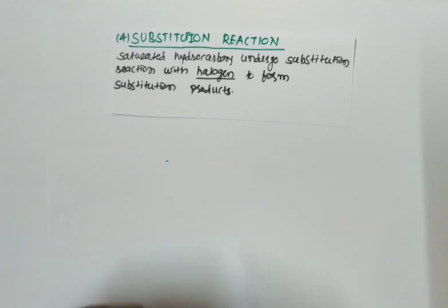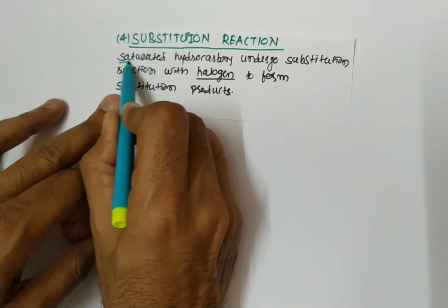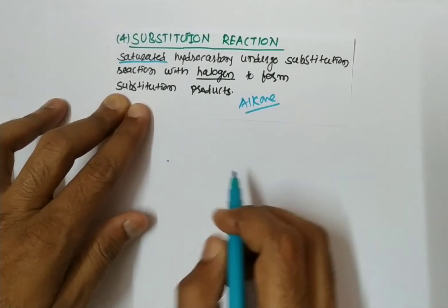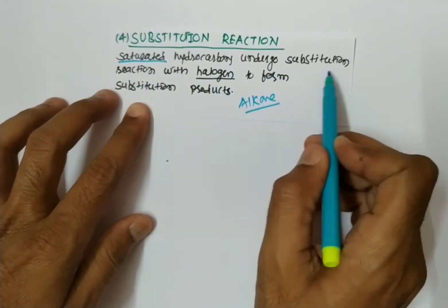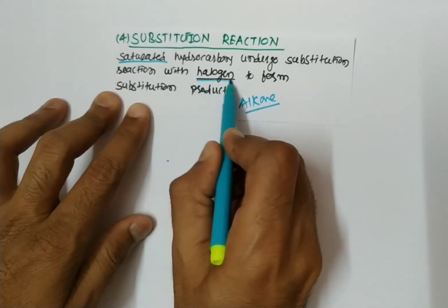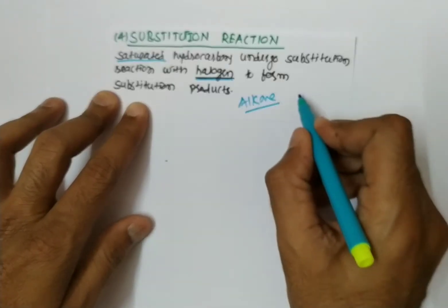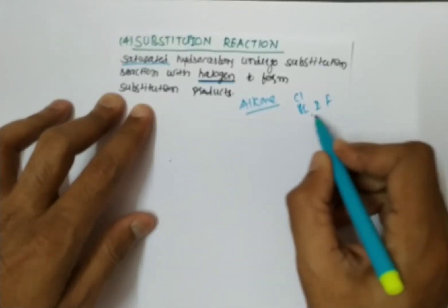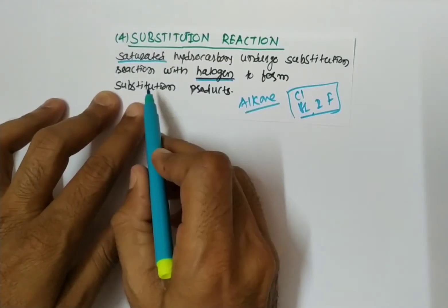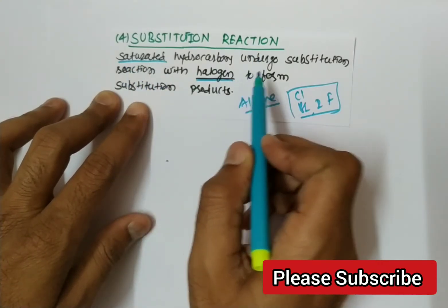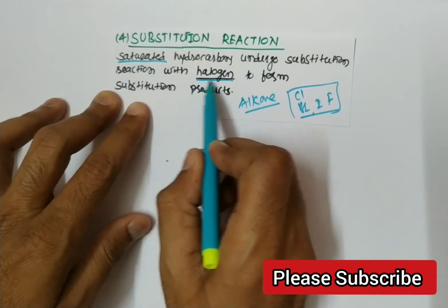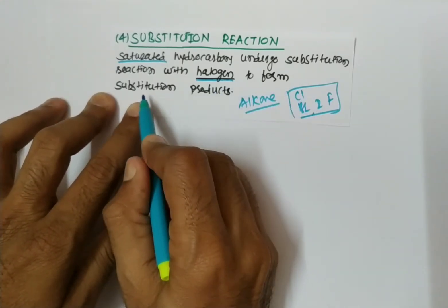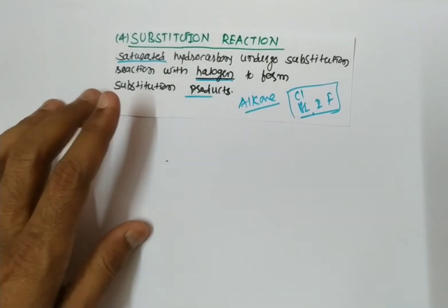Saturated hydrocarbons undergo substitution reaction. Saturated hydrocarbons undergo substitution reaction with halogens. Halogens include chlorine, bromine, iodine, and fluorine. When a saturated hydrocarbon undergoes substitution reaction with a halogen, a substitution product is formed.